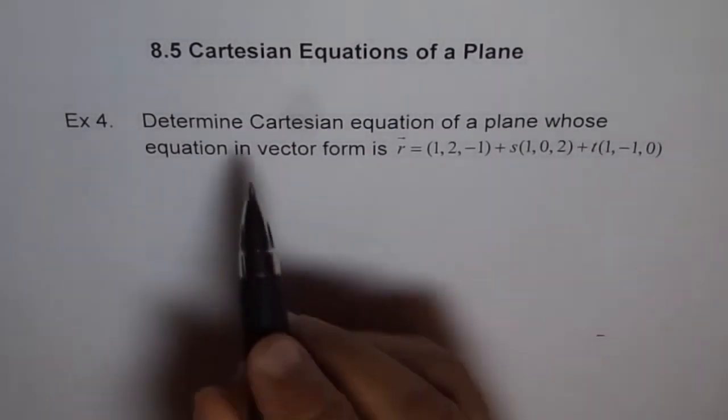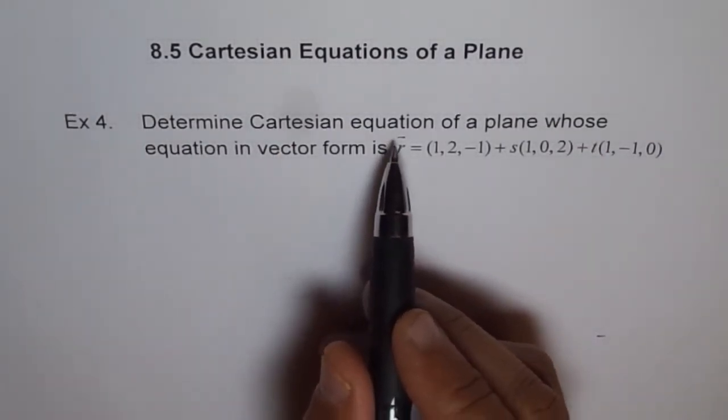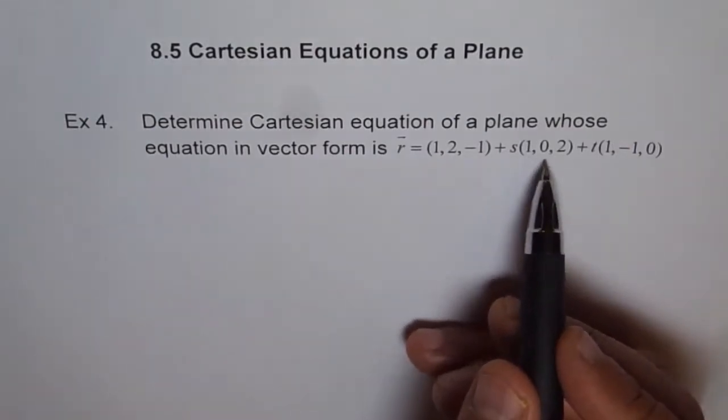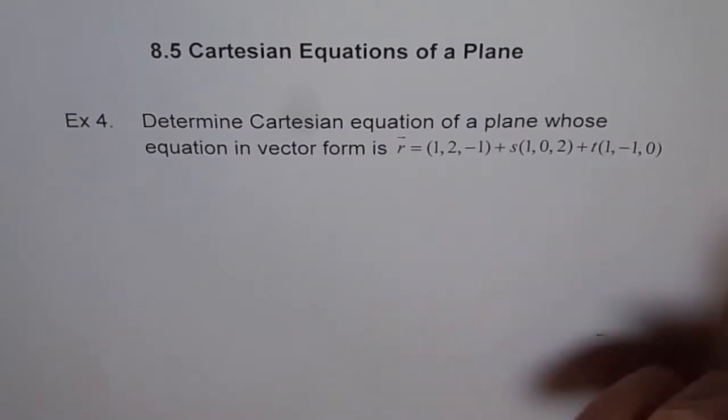To find the Cartesian equation, we need two things. One, a point. Second thing is the normal. How am I going to get the normal? Cross product of these two direction vectors.